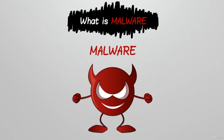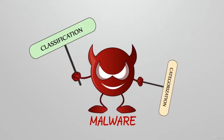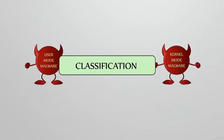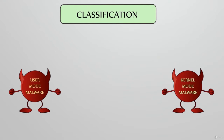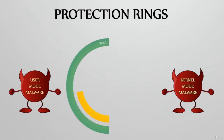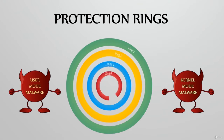Malware can be classified as well as categorised. Beginning with the classification, malware can be classified into two types, namely user mode malware and kernel mode malware. This can be further explained with the help of protection rings, which are nothing but the layers of privileges within the architecture of the computer system.